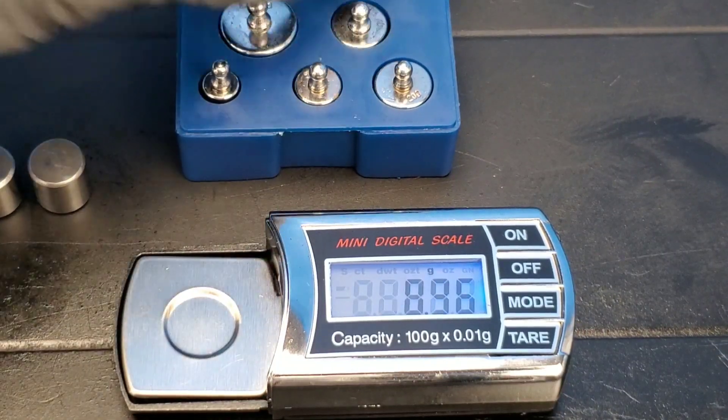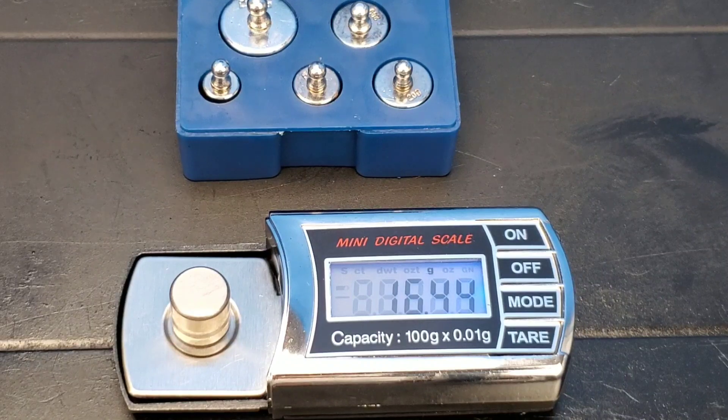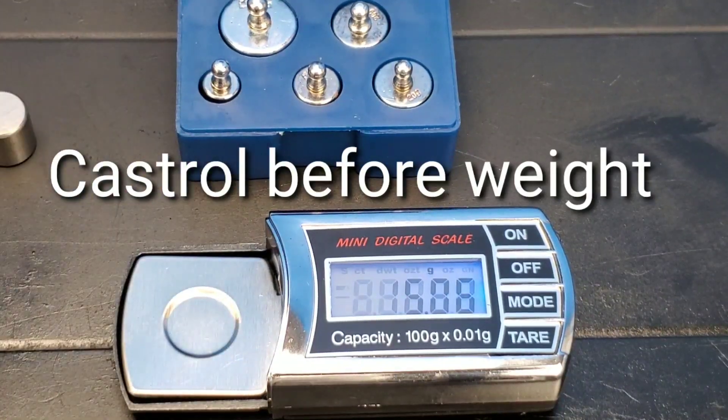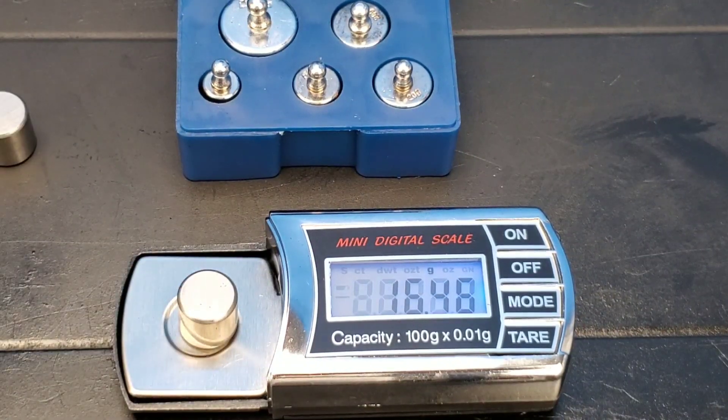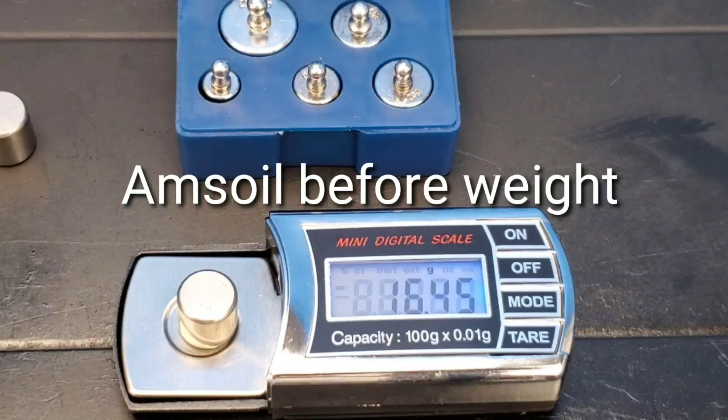We start off calibrating the scale to make sure that it's accurate. Castrol bearing weight before the test: 16.44 grams. Now it's time to weigh the Amsoil bearing: 16.45 grams before the film strength test.